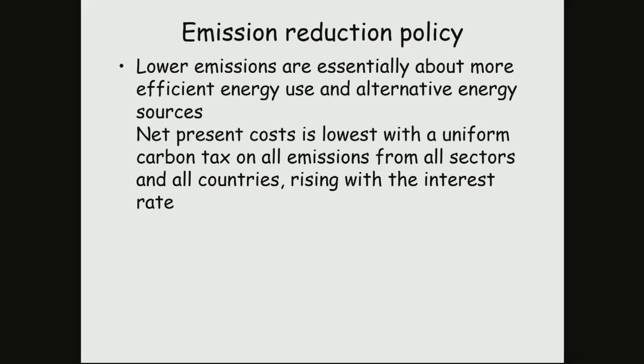Basic efficiency arguments would tell you that if you want to reduce greenhouse gas emissions, the cheapest way of doing so is by equating the marginal cost of emission reduction across the economy. One way of establishing that is a uniform carbon tax. That would guarantee static efficiency. Dynamic efficiency would have the present marginal cost equal over time, which then implies that the marginal cost rises with the rate of interest. These are just standard efficiency arguments.